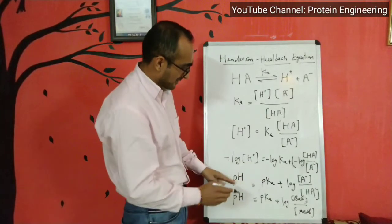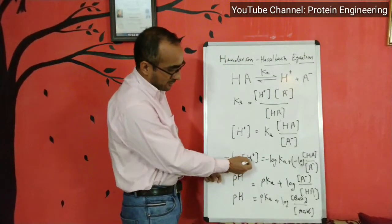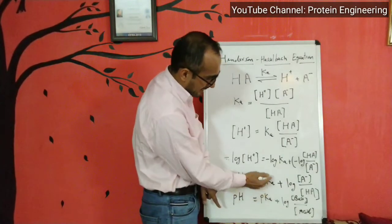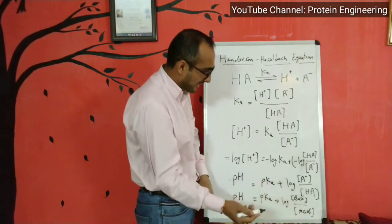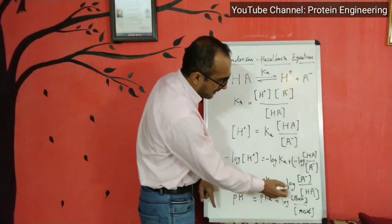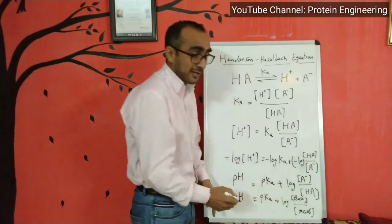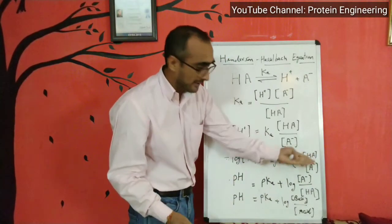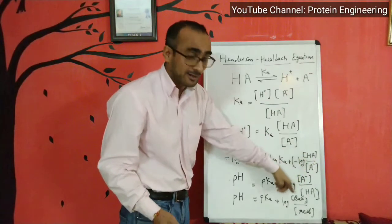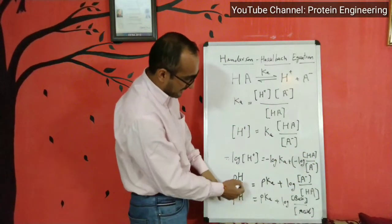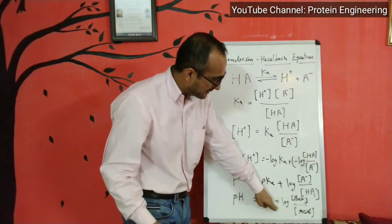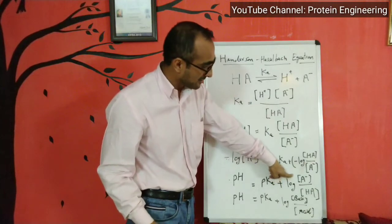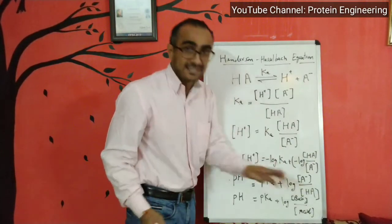Simplifying this equation further: minus log [H⁺] equals pH, and pKa equals minus log KA. So pH equals pKa plus log [A⁻]/[HA]. Because of the minus log, when you make it positive, A⁻ goes up and HA comes down. A⁻ is the conjugate salt behaving like a base, and HA is the acid.